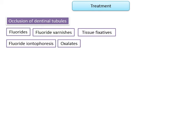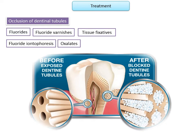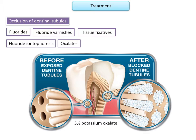Oxalates: desensitizers containing metallic salts — predominantly 3% potassium oxalate — form insoluble chemical precipitates like calcium oxalate in the peritubular dentine. They do not require acid etching or light curing and cause no gingival irritation. The oxalate forms a crystal plug in the calcium-rich zone of the peritubular dentine, effectively shutting down dentine sensitivity at approximately 100%. However, the action is short-lived and removed by brushing, so acid etching with 35% phosphoric acid prior to application can increase longevity.